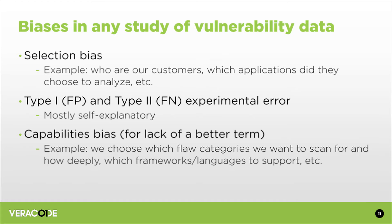Finally, there's what I'll call capabilities bias. We as a company choose how deeply we want to go into each language and each framework. If we just launched support for a new language at the end of that window, then that language is going to seem better than it actually is, because we don't have as much data or we may not be as deep in detecting those vulnerabilities. I know it's weird to start by listing all the things wrong with the data, but I don't see it done often enough.